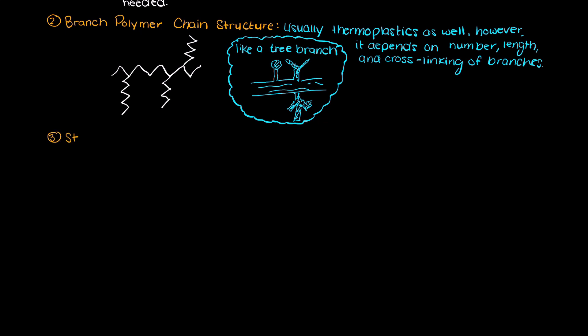Thirdly, we could have a star branched polymer chain. These are similar to branched polymer chains however all of the branches come off of one central monomer. And as you can see here it is obvious where the name comes from as it does indeed look like a star.